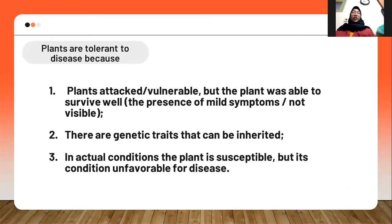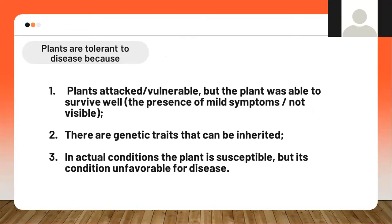Plants are tolerant to disease because: first, the plant is attacked or vulnerable but is able to survive well; second, there are genetic traits that can be inherited; and third, in actual conditions the plant is susceptible but conditions are unfavorable for disease.